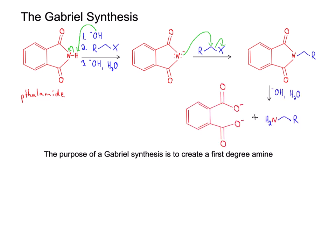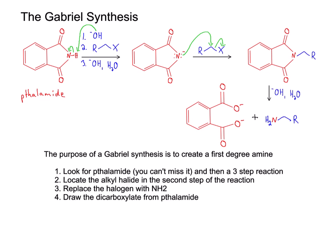If you need a refresher on hydrolysis, feel free to check out my hydrolysis one-slide guide video. The products are our primary amine and what's left of the phthalimide. We can also use a shortcut: once you recognize you have a phthalimide, go to the second step and replace the halogen in the alkyl halide with an NH2. If your class requires it, don't forget to draw the dicarboxylate byproduct from the phthalimide.